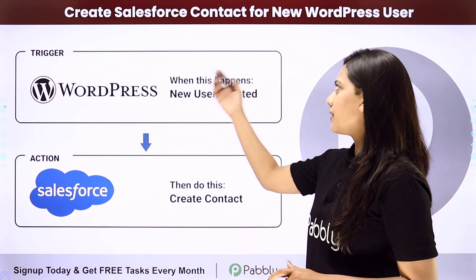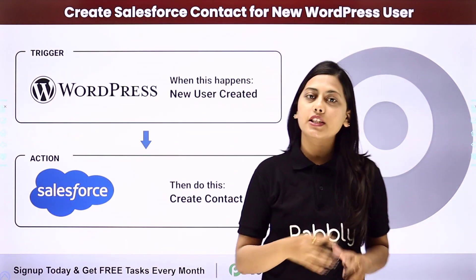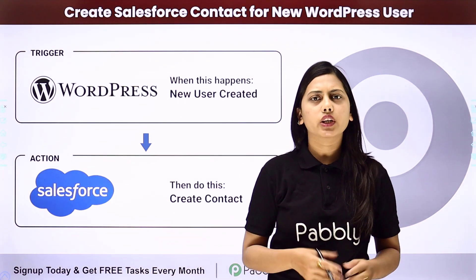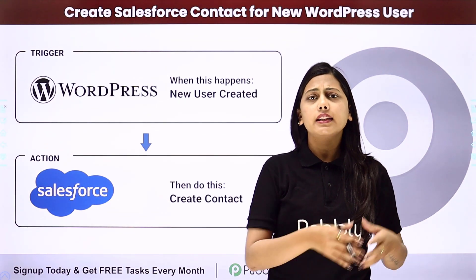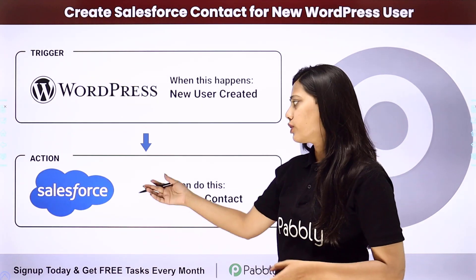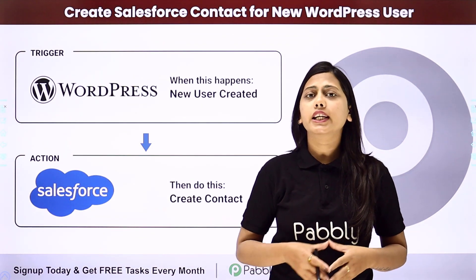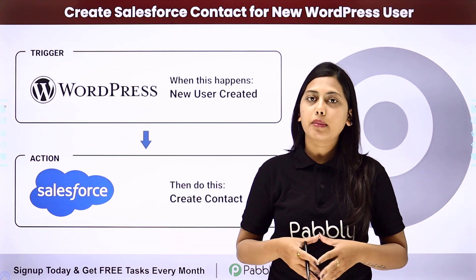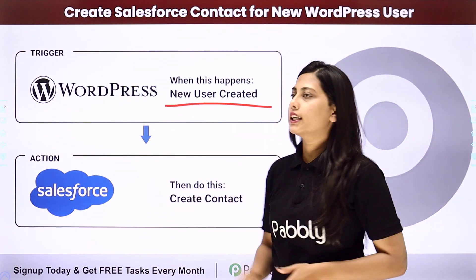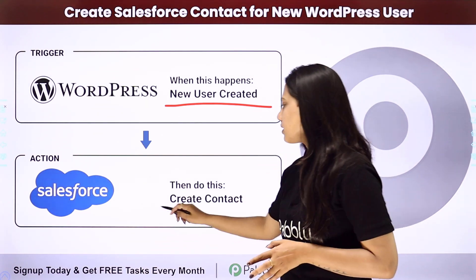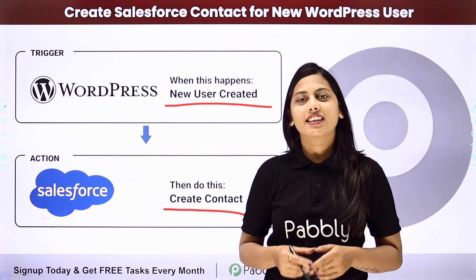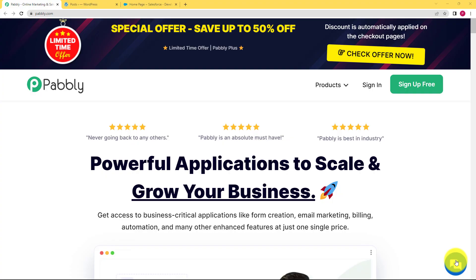Hello everyone. Today we will learn how to create Salesforce contacts for new WordPress users, which means that every time you create a new user in your WordPress account, you want that it should also create a contact in your Salesforce. We can create an automation for this whole process where our trigger will be a new user created in WordPress and our action will be a new contact created in Salesforce.